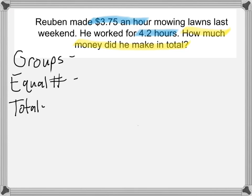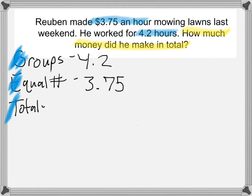So when we have equal groups going on, we use a strategy called GET. The G stands for the amount of groups that we have — in this problem, we have four and two tenths of an hour. The E stands for the equal number that's in each group — the equal thing happening in every group. In this case, every hour he makes $3.75. And then the T stands for total — that is what we're actually looking for in this problem. Sometimes you'll have the total given; in this case, it's what we're looking for.